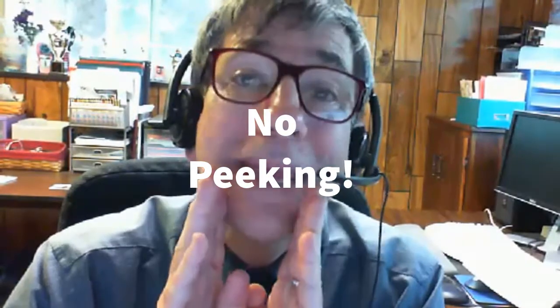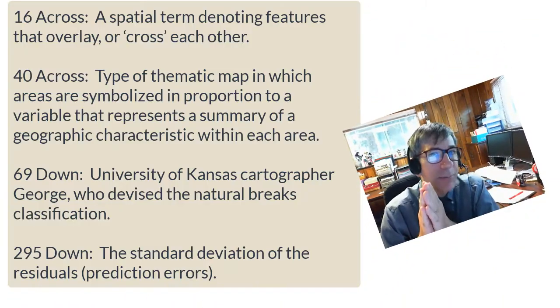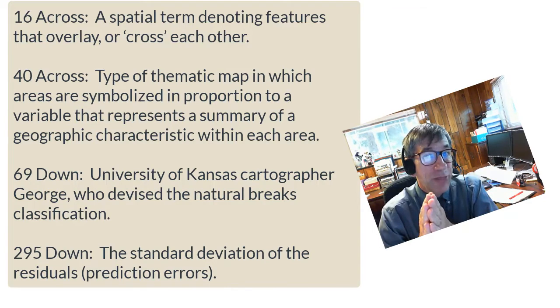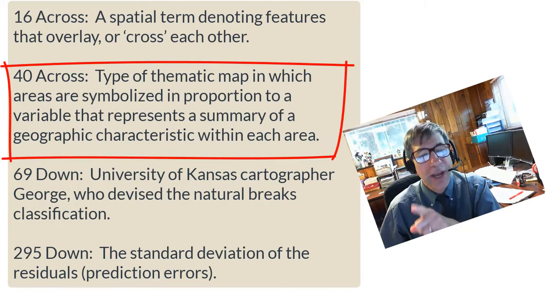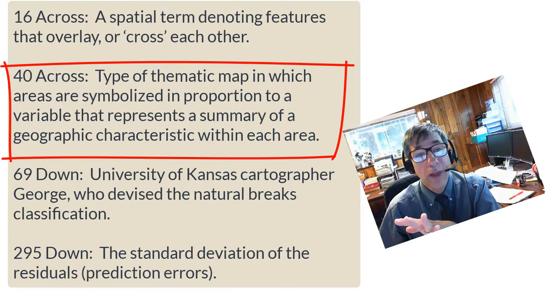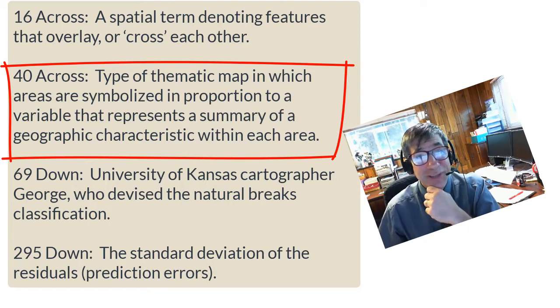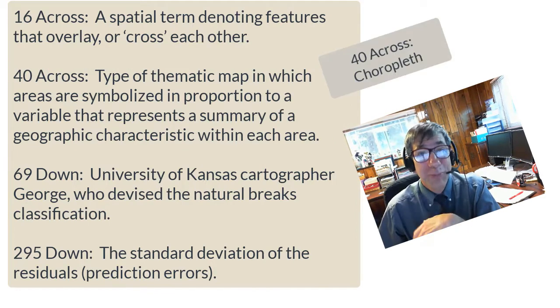Have fun, and no peeking at the answers. Now let me give you a couple of the solutions. 40 across — that was a type of thematic map in which areas are symbolized in proportion to a variable that represents a summary of a geographic characteristic within each area. The answer is choropleth.